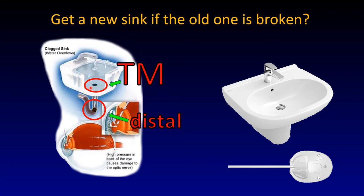Again, you really can't tell. You don't know the reason for not getting a pressure drop. If the laser made the trabecular meshwork more permeable, you would expect the pressure to drop — except you wouldn't if there were distal outflow resistance in addition to the trabecular meshwork resistance just treated. If you get no effect, you don't know whether the trabecular meshwork is simply non-responsive or whether there is a downstream blockage.